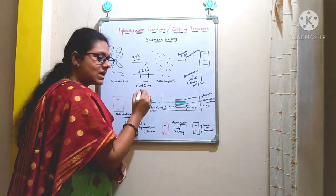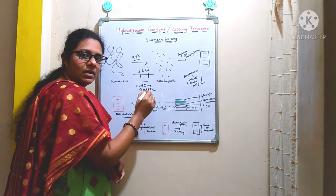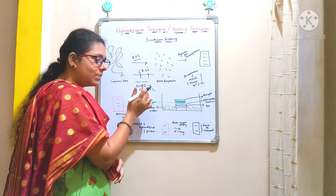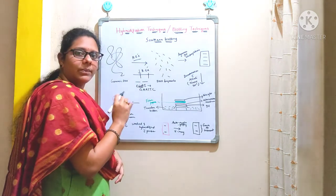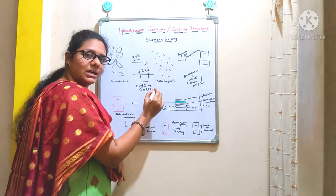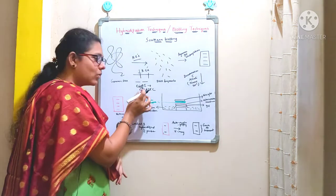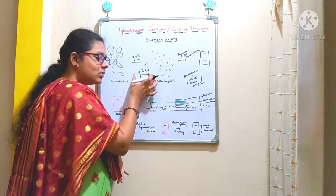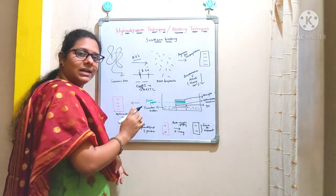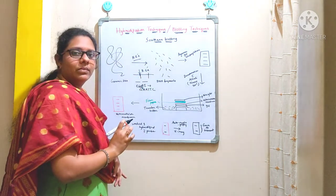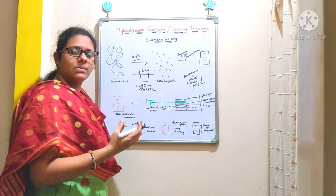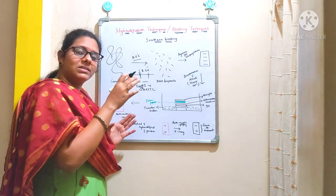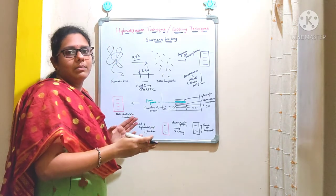For example, the restriction enzyme EcoRI recognizes the sequence GAATTC and specifically cuts between guanine and adenine. There are many restriction enzymes, each recognizing a specific sequence in the DNA and cutting at that precise position. After isolating the genomic DNA, you digest it with restriction enzymes to obtain multiple DNA fragments, each with a different size and molecular weight.